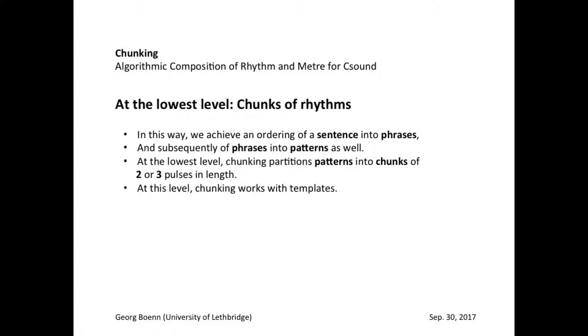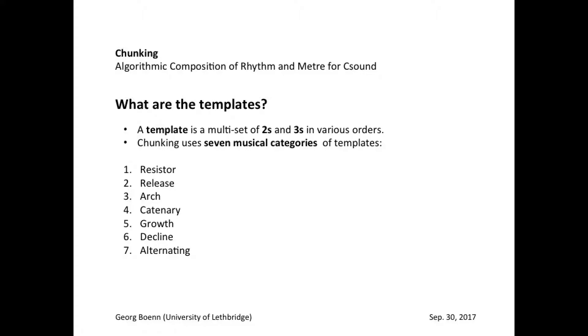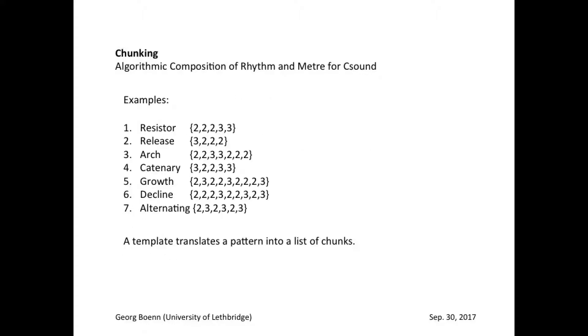At this level Chunking works with something we call templates. A template is simply a multi-set of twos and threes representing durations in various orders. In order to better organize the large number of combinations that are possible, Chunking uses seven different musical categories of templates. Here are some examples. First, the resistor: one or more twos are followed by one or more threes. The idea here is that a flow of twos is resisted against by the introduction of threes, which form an opposition.